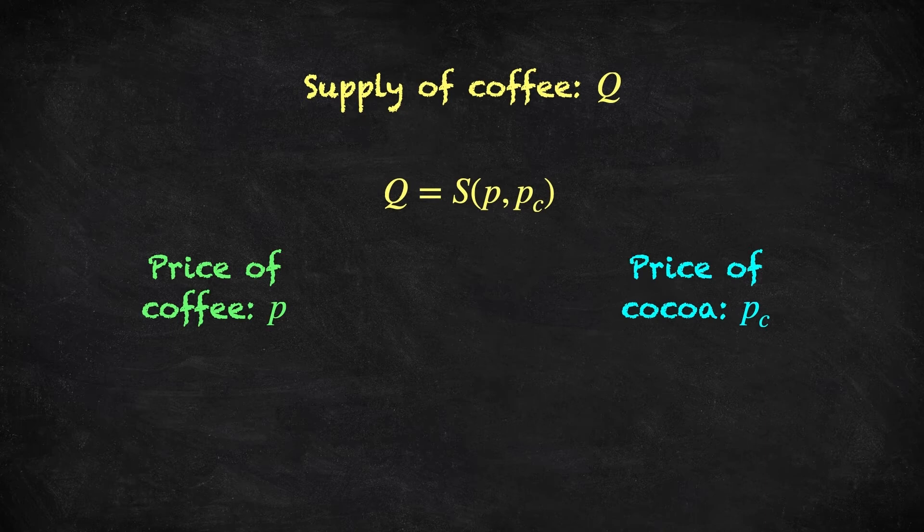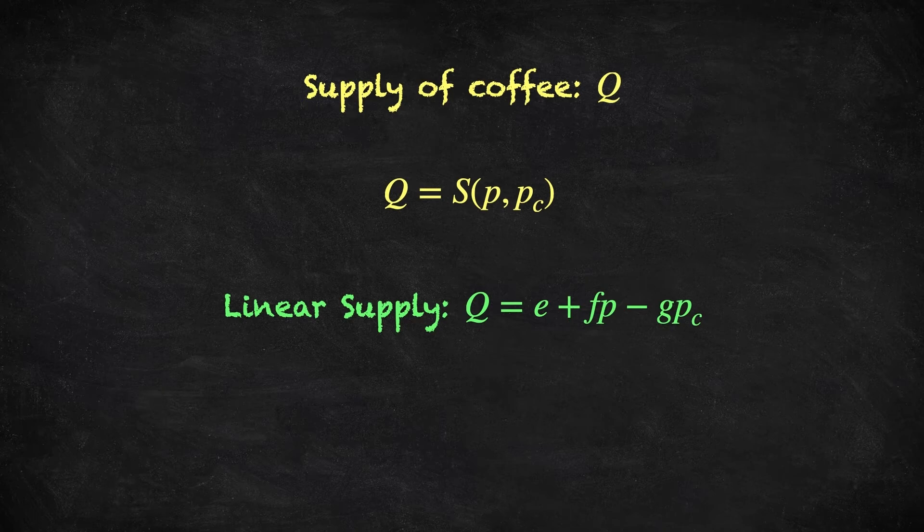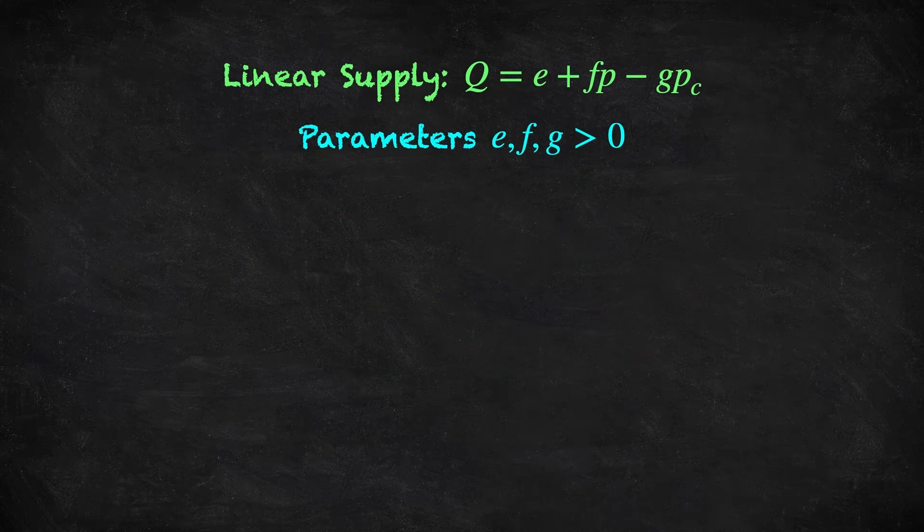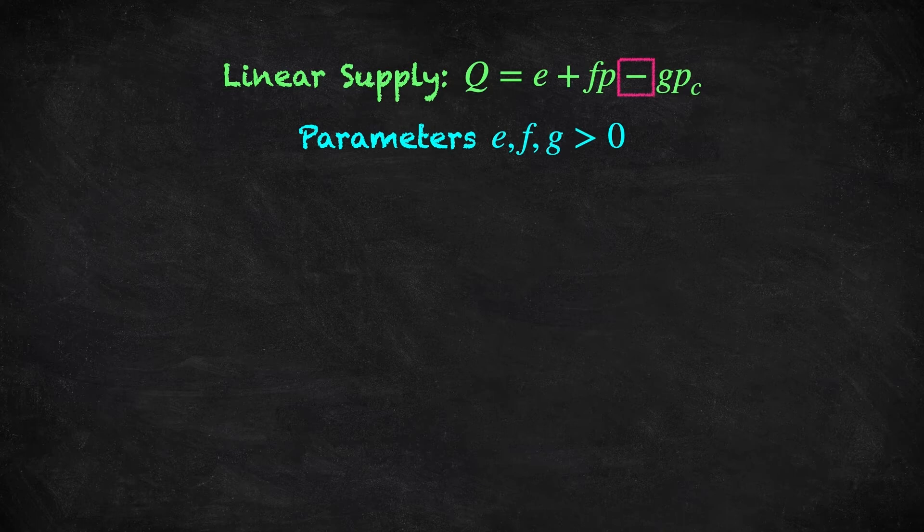Typically we'll think of it as an increasing function of the market price. Here we're going to work with a linear supply function, so something like Q equals E plus F times the price of coffee minus G times the price of cocoa, where E, F and G are positive parameters. We assume a plus sign here so that price increases lead to supply increases, and a minus sign here to capture the idea that if cocoa were to increase in price, then the firm will decrease its supply of coffee, presumably to sell cocoa instead.